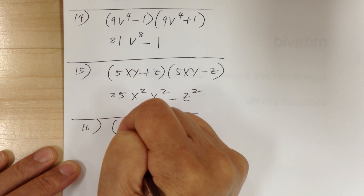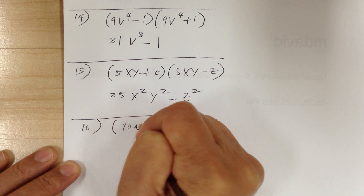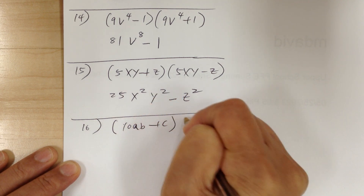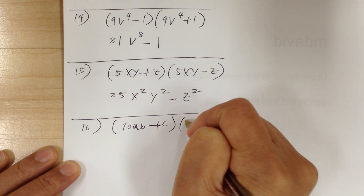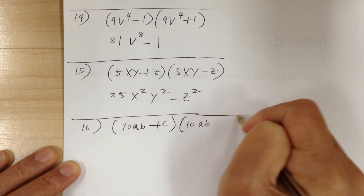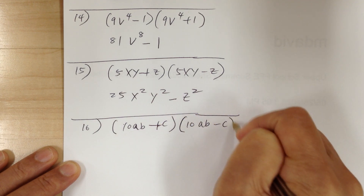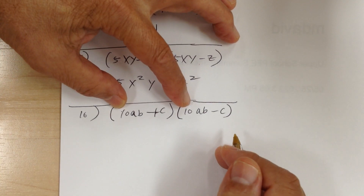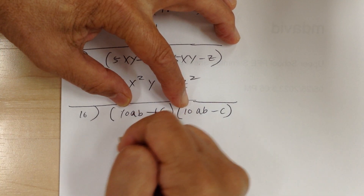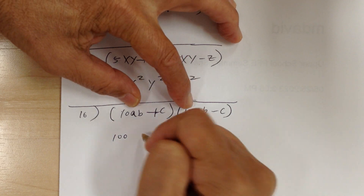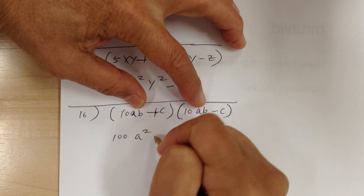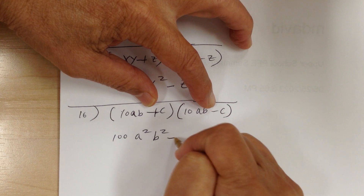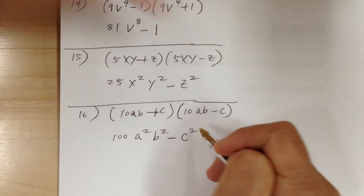Number 16: you have 10ab plus c times 10ab minus c. They are conjugates, so you can just do the F and L. Multiply: 100, a times a is a squared, b times b is b squared, plus times minus is minus, c times c is c squared.